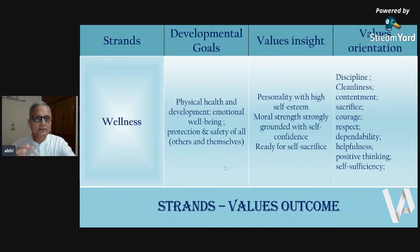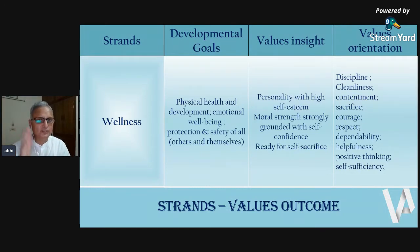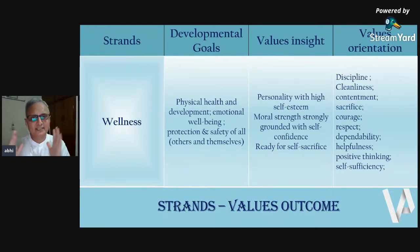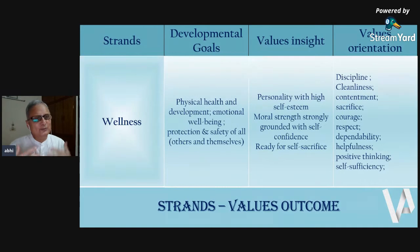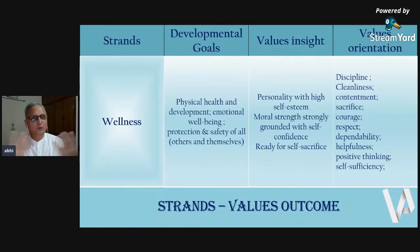From the developmental goal perspective, it says physical health and development, and emotional well-being, and protection and safety of all. So when I say well, that means I am able to do all of this. From a values perspective, when you look at it — how do I call a person well? I look at a personality with high self-esteem, grounded with moral strength, which is self-confidence, and ready to serve and sacrifice. That is wellness. Only when I have these personality traits can I say I am holistically well.